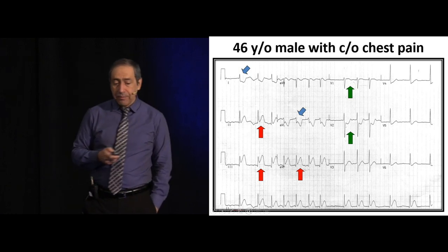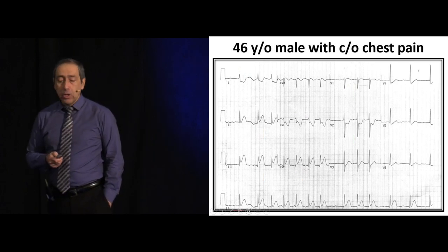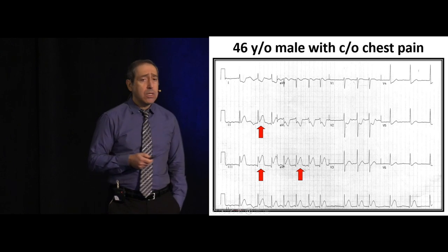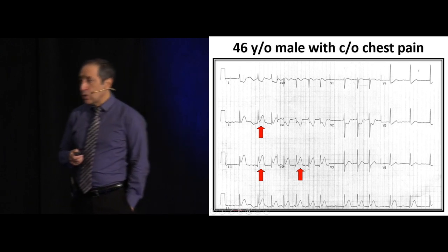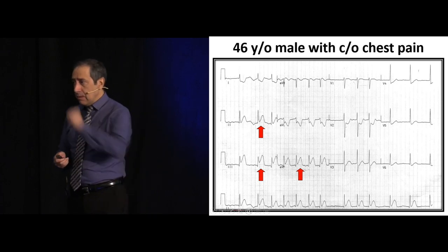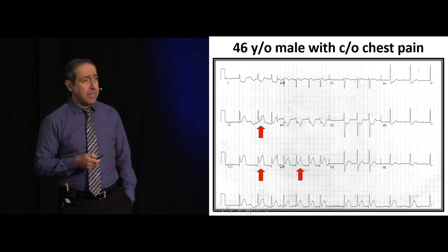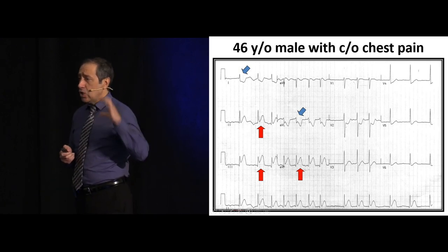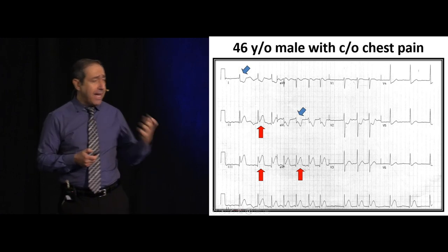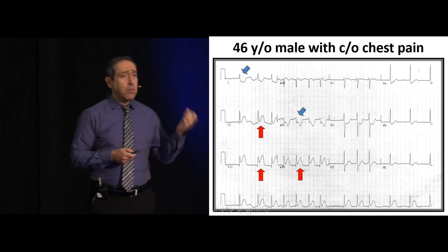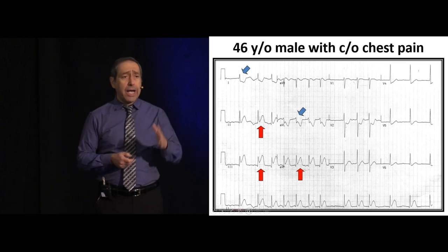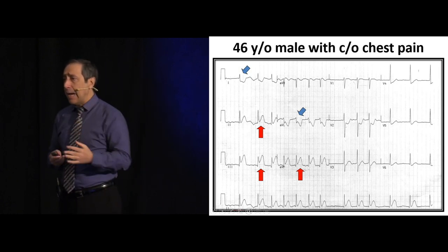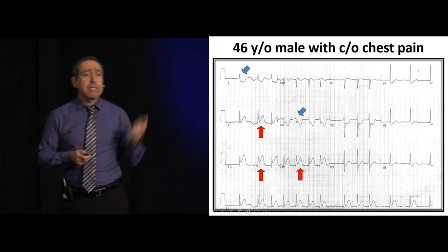Let's go back to our EKG. So this is our inferior MI. We look for ST elevations in leads 2, 3, and AVF. With right coronary occlusion, the lead 3 ST elevation is typically greater than lead 2. We have reciprocal changes in leads 1 and AVL, most commonly in AVL. Remember the reciprocal rule: elevation in lead 3 and depression in AVL. Whenever you have ST depression in AVL, your eye should go right away to lead 3, and vice versa.